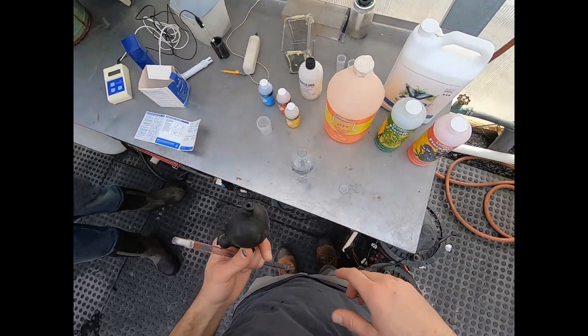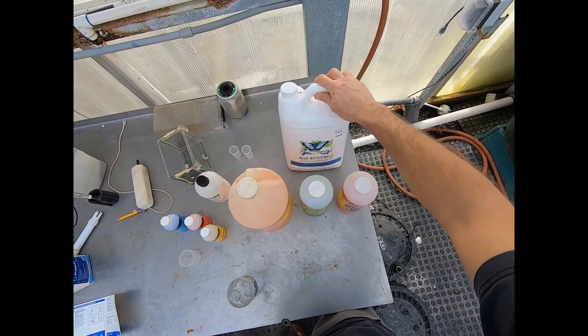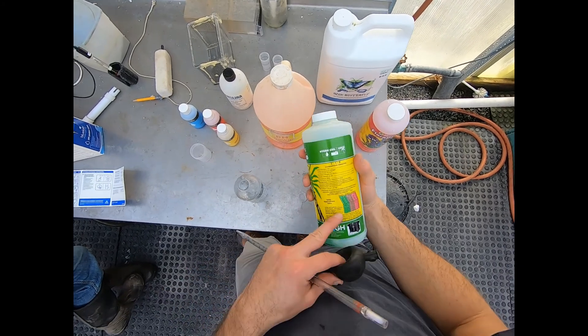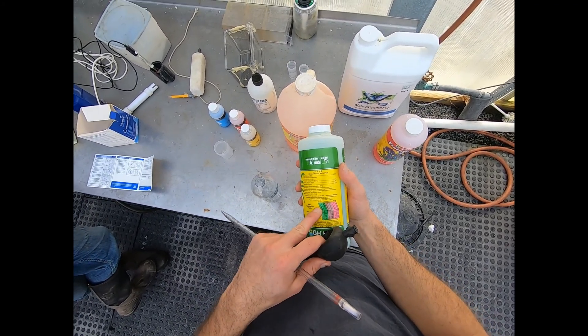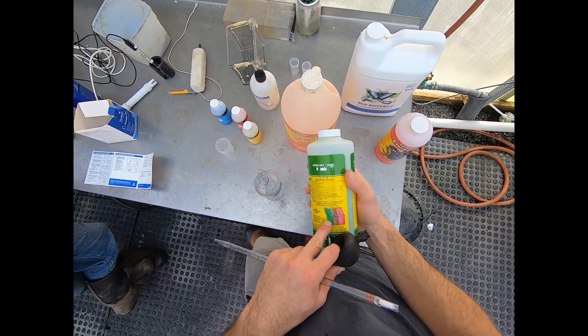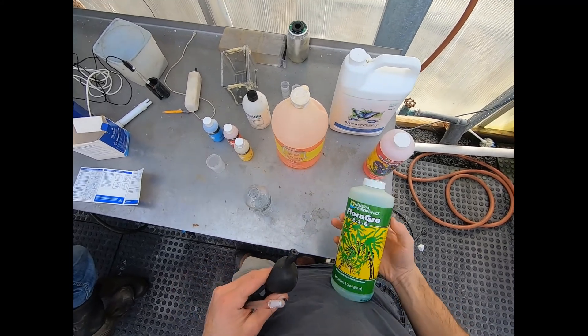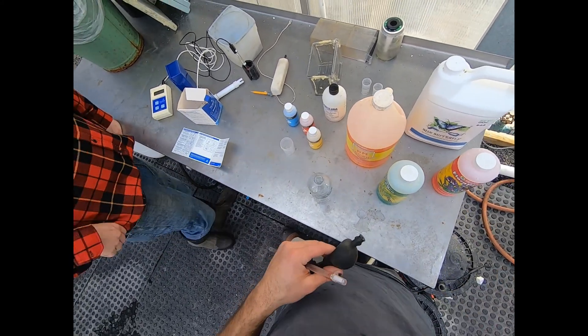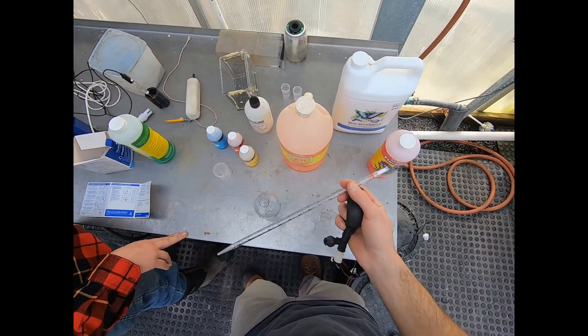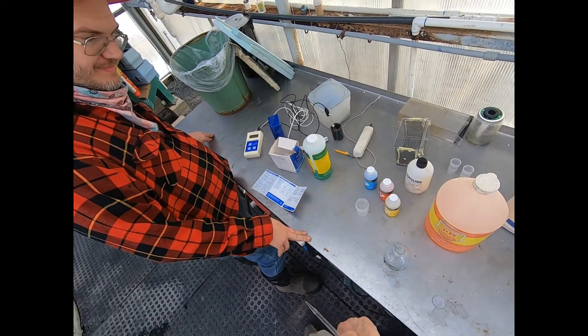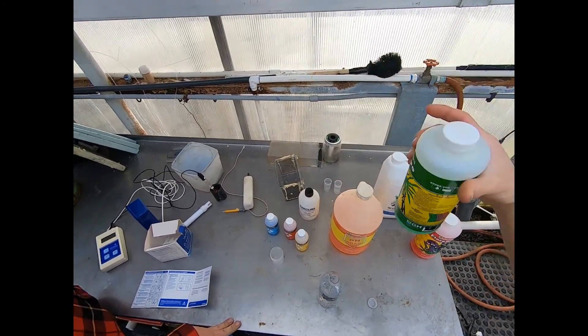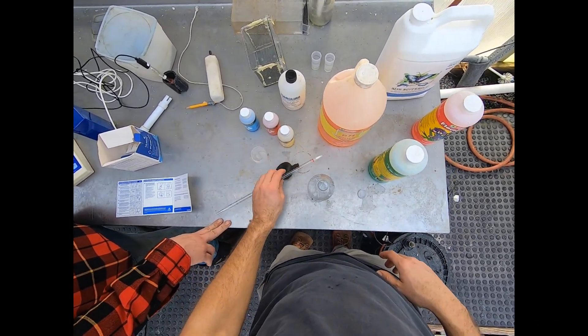All right, so we got our pH down, our flora grow, our flora bloom, and then a different type of micronutrient. If we follow the flora grow requirements, we have a 25-gallon container. We need a teaspoon per gallon for mild vegetative growth. One teaspoon per gallon means we need 25 teaspoons. A teaspoon is five milliliters, so that means we need 100 milliliters into that 25-gallon reservoir.